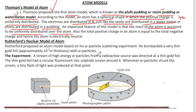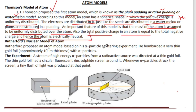The mass of the atom is uniformly distributed over the atom. Also, the total positive charge in the atom is equal to the total negative charge, and hence the atom is electrically neutral.